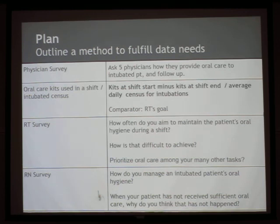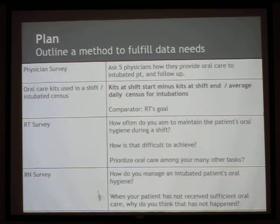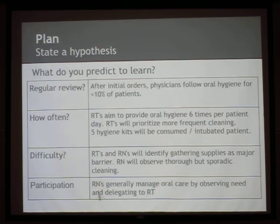Here's our final outline of the method: a physician survey of five people, the oral kit rate calculation with a comparator of the RT's stated goal, a survey of the RTs, and a survey of the RNs — all a reasonable number of questions, asked quickly. We don't ask leading questions and we don't pit teams against each other. We'll find out good information and now we're ready to make some predictions about what we think we'll learn.